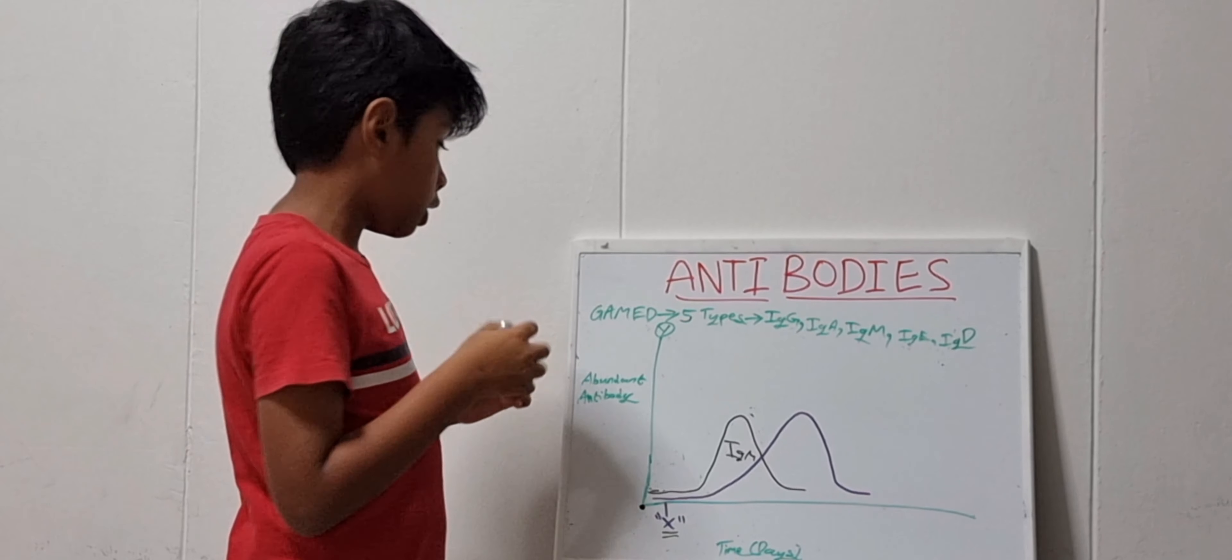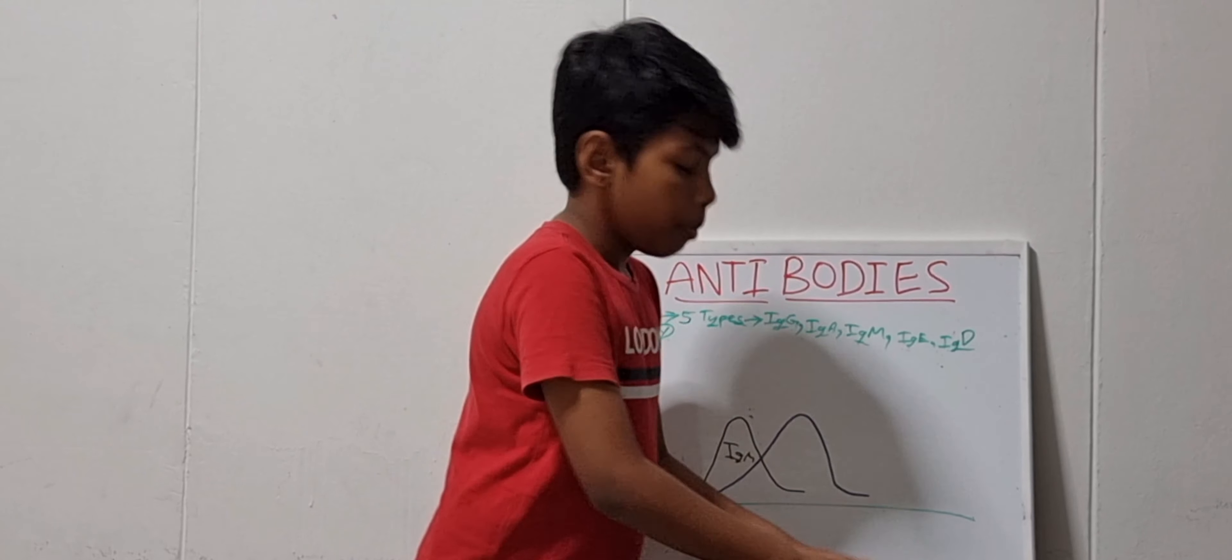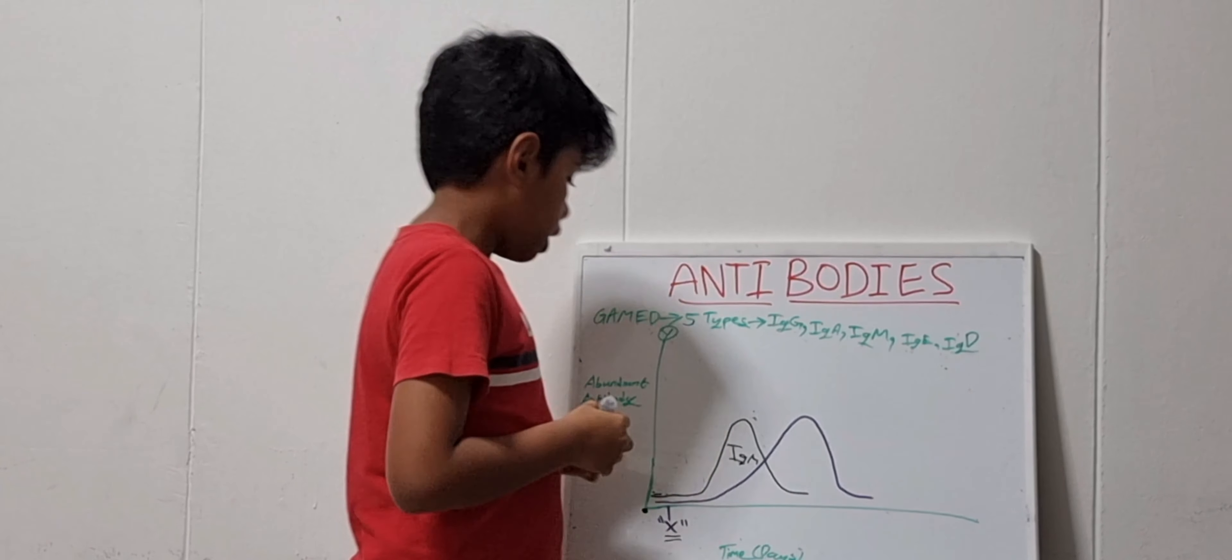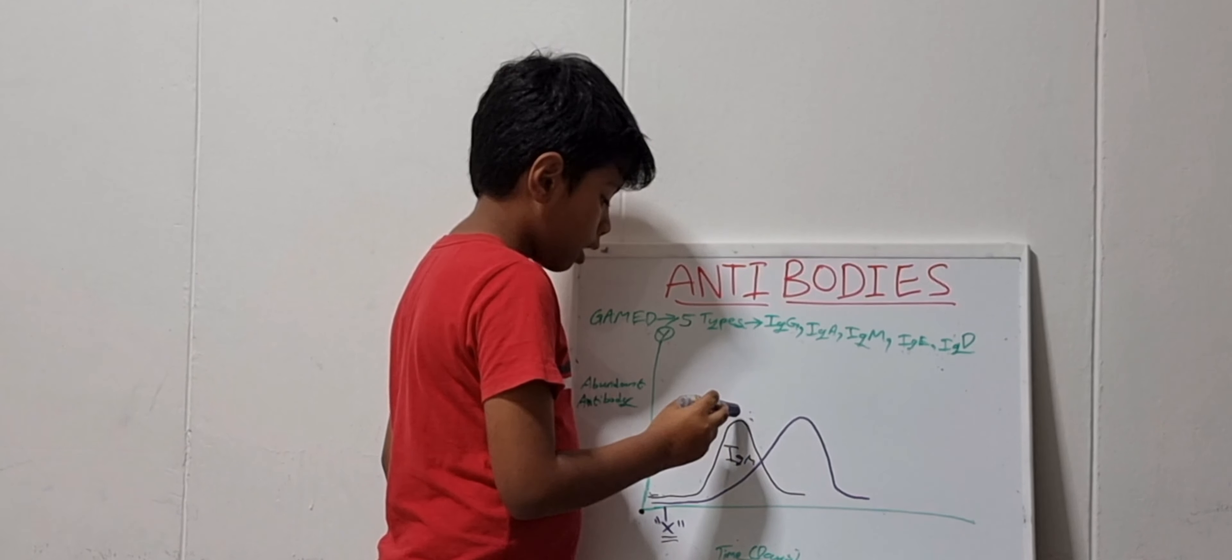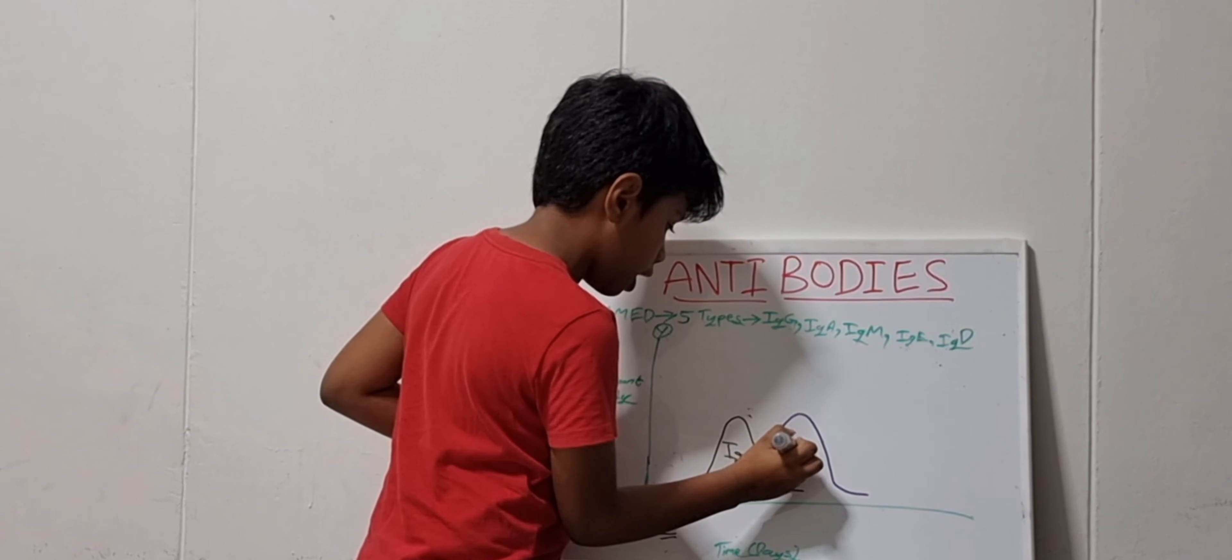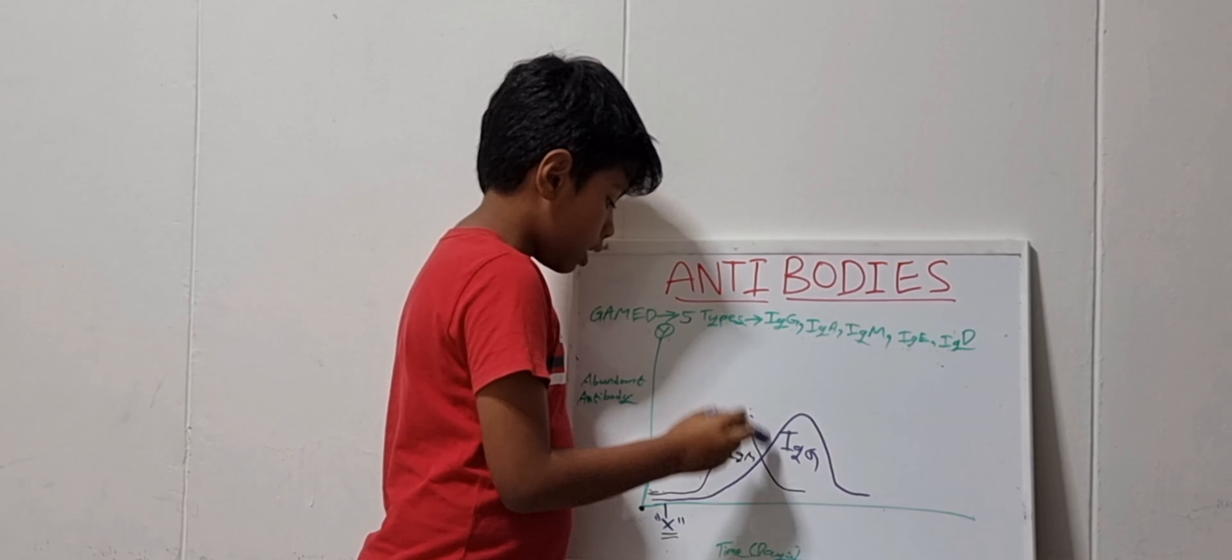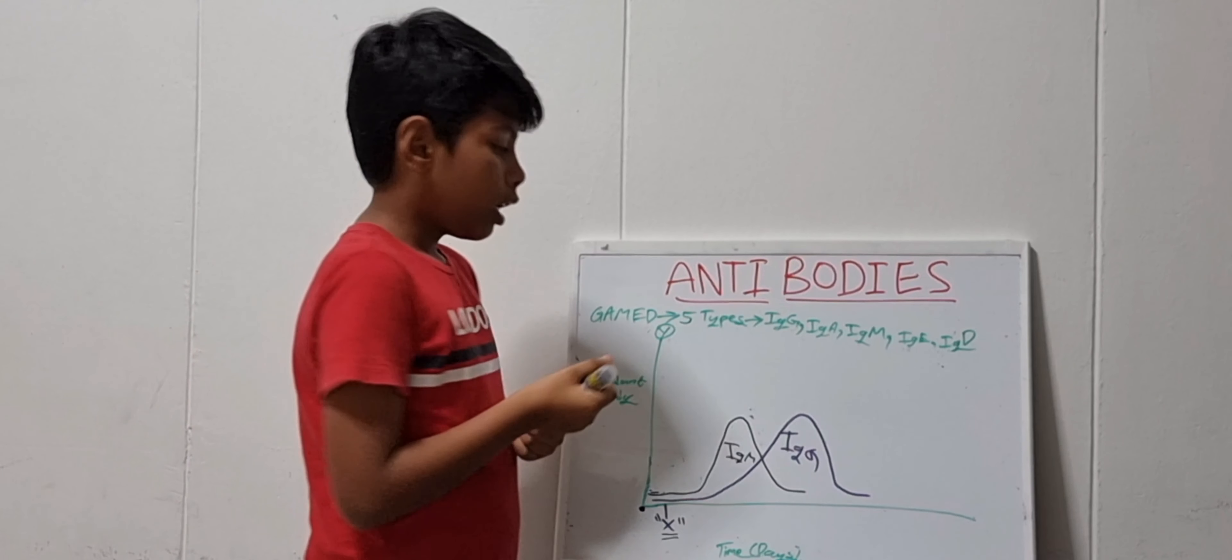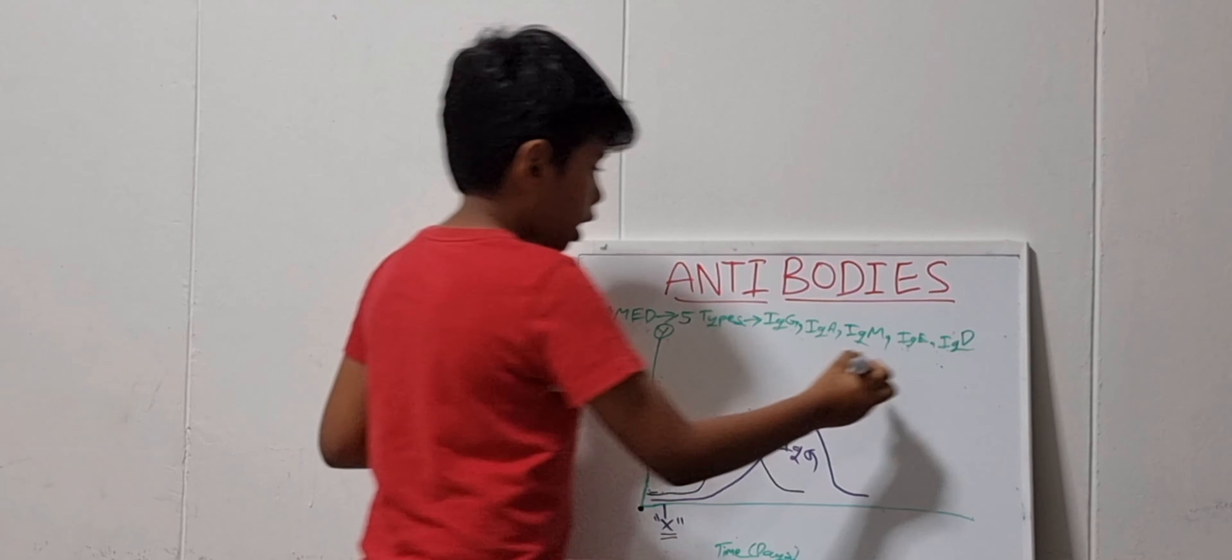This is the first antibody which will be produced in the primary immune response. But then later on, in the primary immune response, there is another antibody which comes with this. The antibody starts rising and IgM starts decreasing. So, this antibody is the IgG antibodies. And you can observe that this IgM decreases and IgG increases.